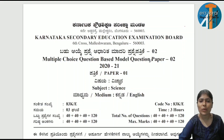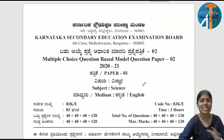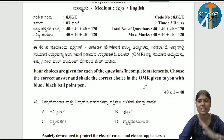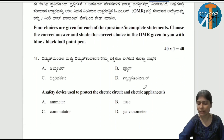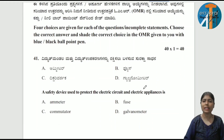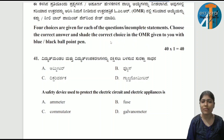Multiple choice questions based on model paper 2 — the science paper has been released with 40 questions total. We will discuss them chapter-wise to check how many marks are scored. Now we will start with the electricity lesson first. There are 5 questions in the electricity lesson.